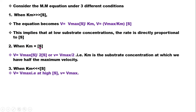Second, when Km equals substrate concentration, V equals Vmax × [S] / (2[S]), which simplifies to V = ½ Vmax. That is to say, Km is the substrate concentration at which we have half the maximum velocity. Third, when Km is much less than substrate concentration, V equals Vmax — so at high substrate concentration, V approaches Vmax.